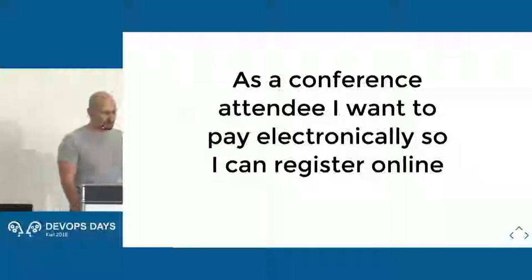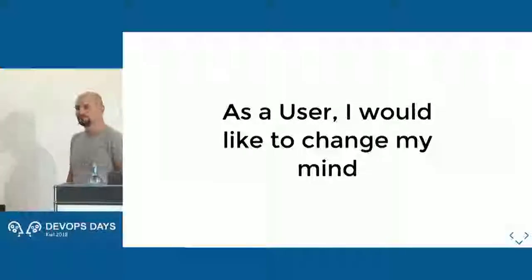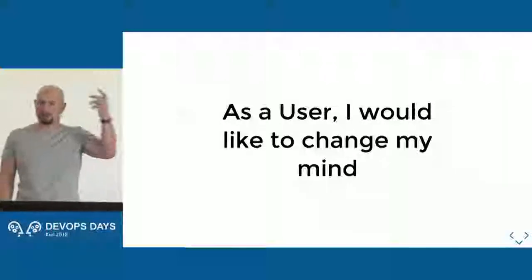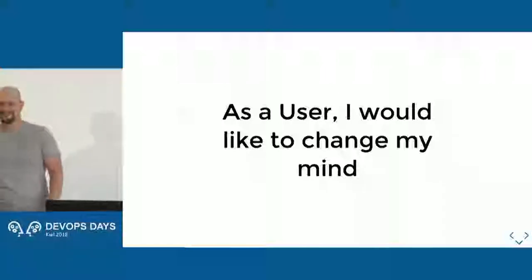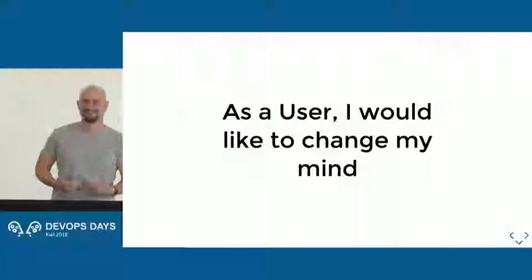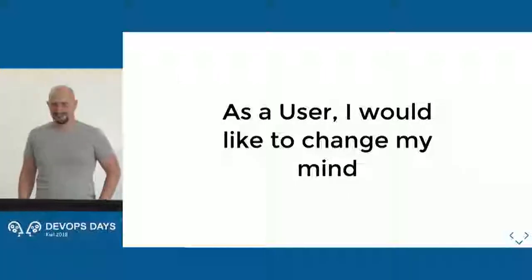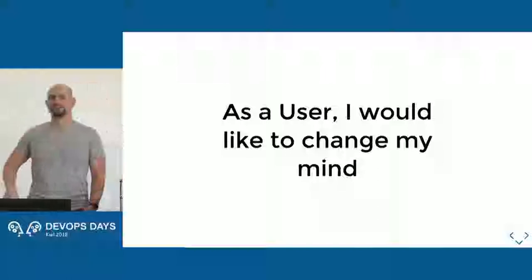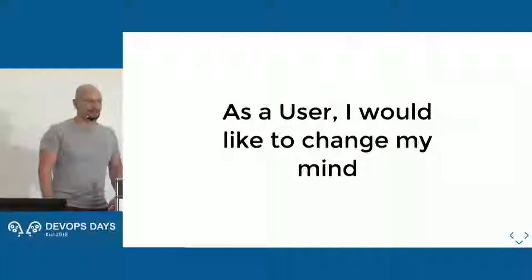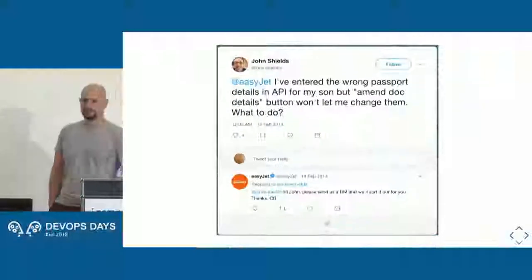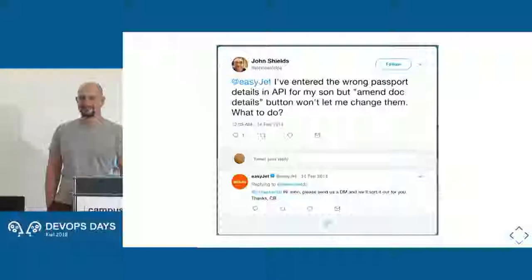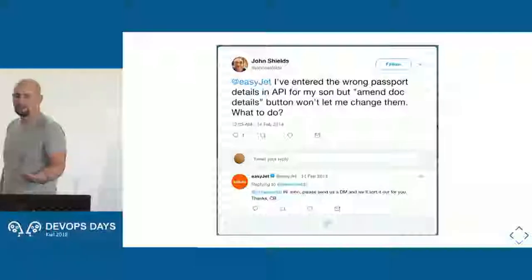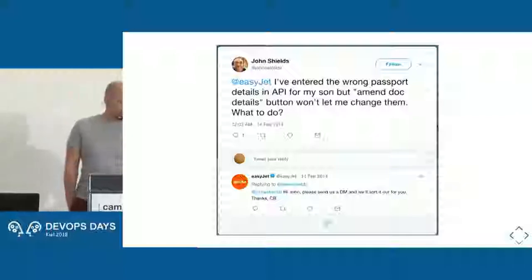But we're not here to talk about those obvious user stories. We're here to talk about the ones no one writes — like this one: as a user, I would like to change my mind, or maybe I made a mistake. For example, I registered for a conference and misspelled my name, and for the rest of the conference I have to wear a name tag that says 'David.' You'd be surprised how many systems don't support simply going back and changing something.